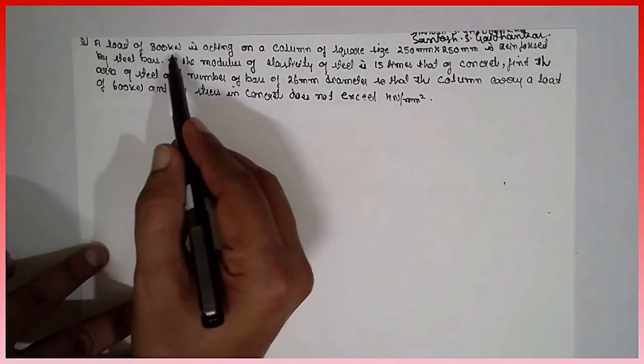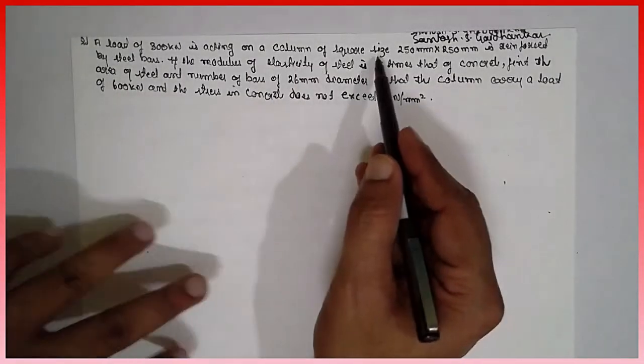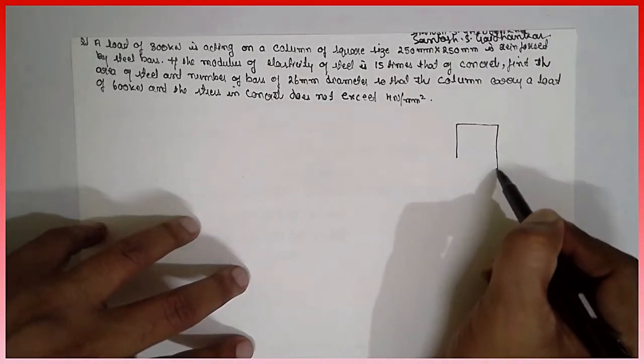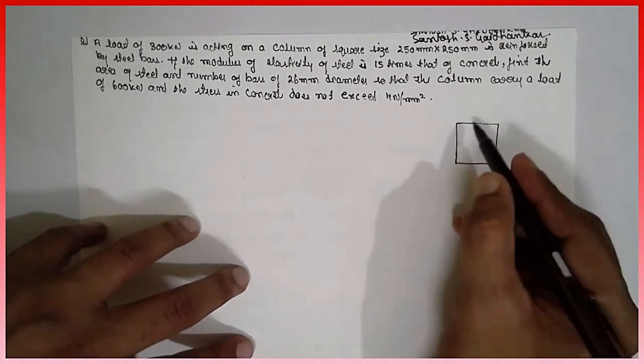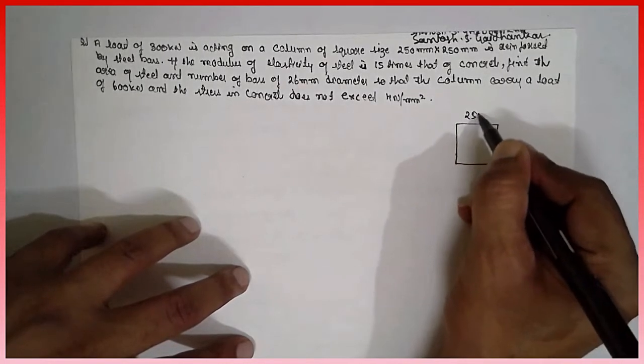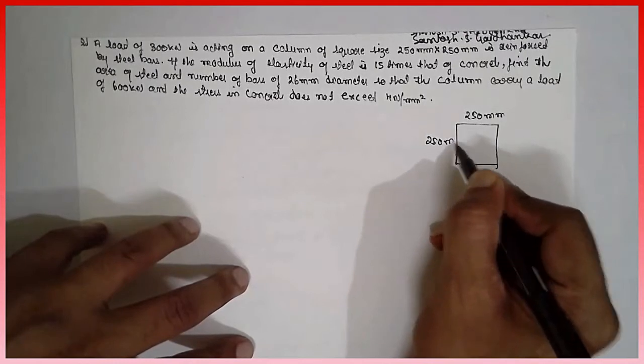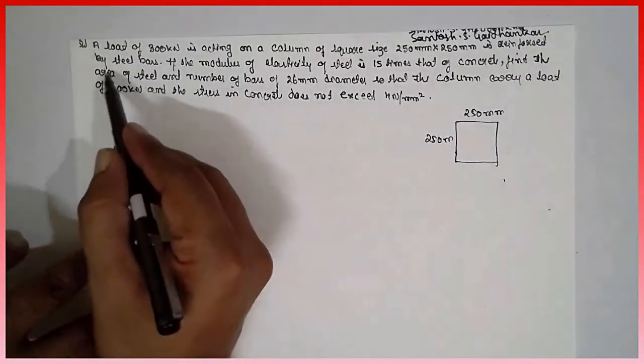A load of 300 kN acting on a column of square size, square size 250 mm, is reinforced by a steel bar.